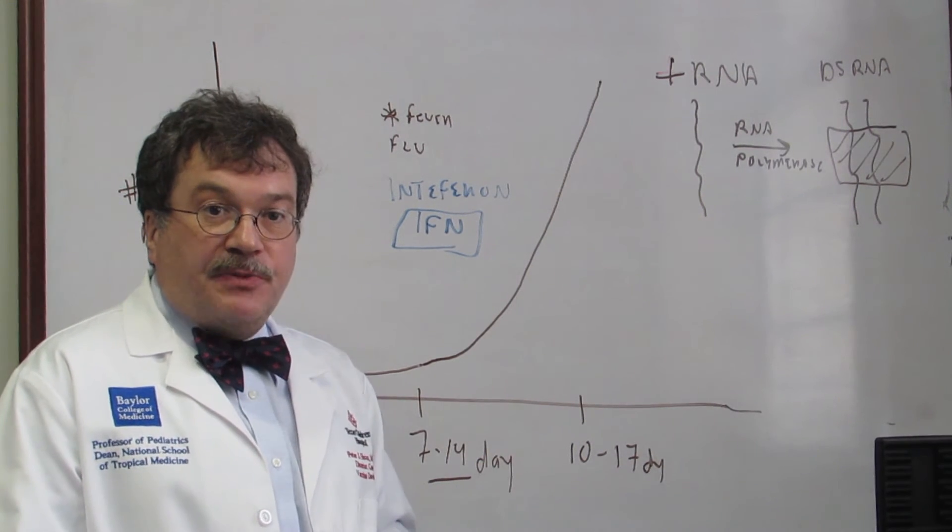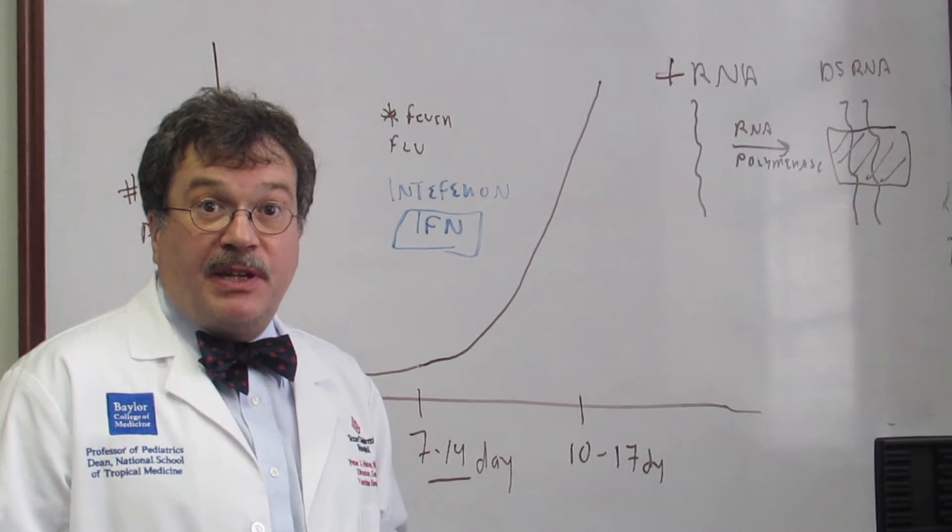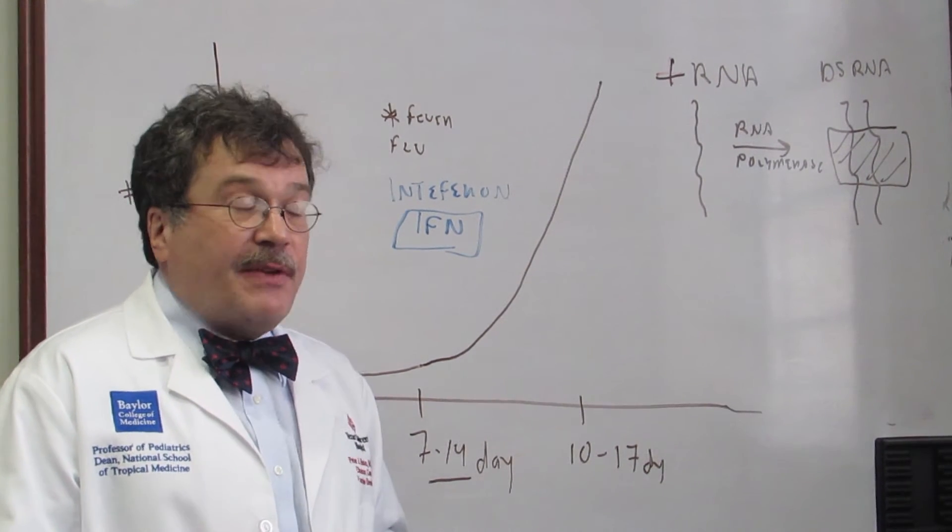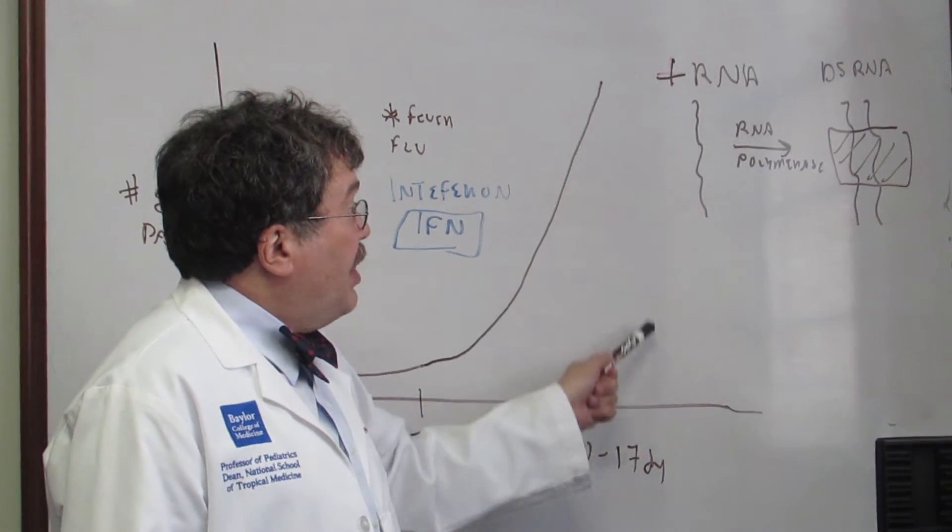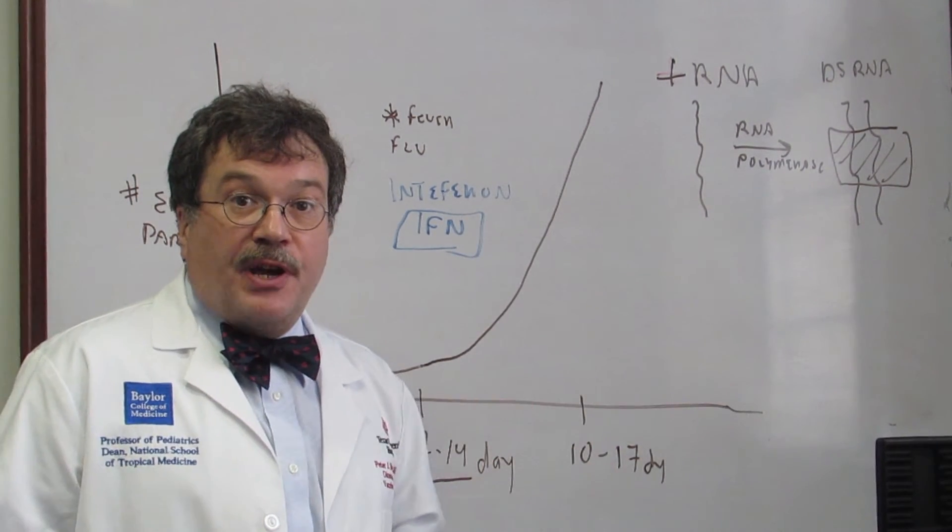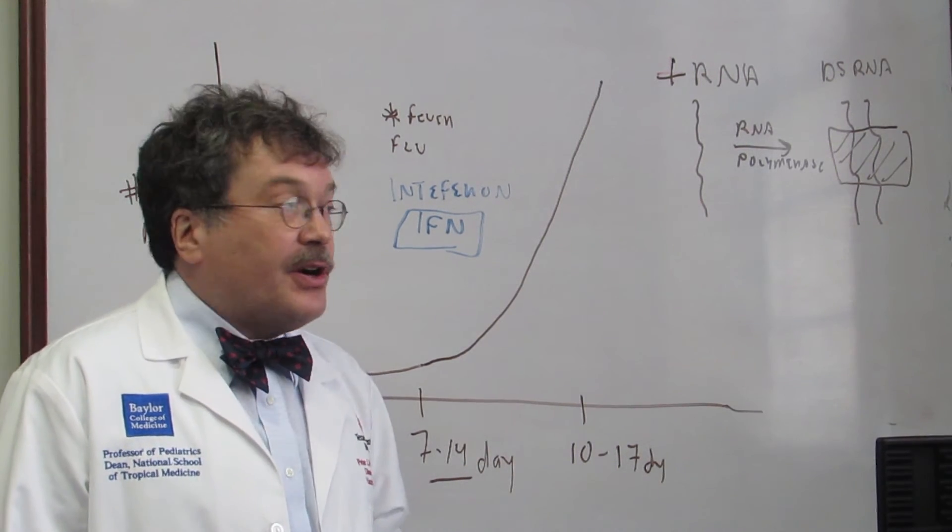And the reason why a patient with Ebola gets so sick and ultimately will die 70% of the time, because it has a 70% mortality, is because of massive numbers of viral particles actually destroying our target organs. Some people use the term liquefying our target organs.